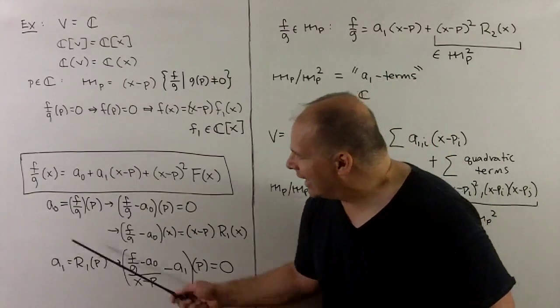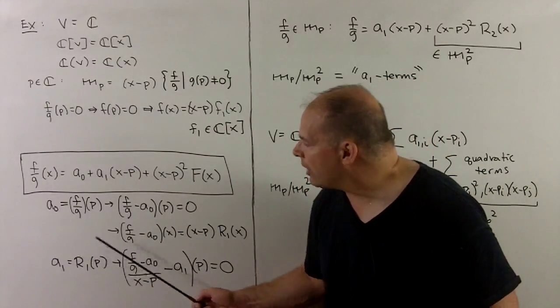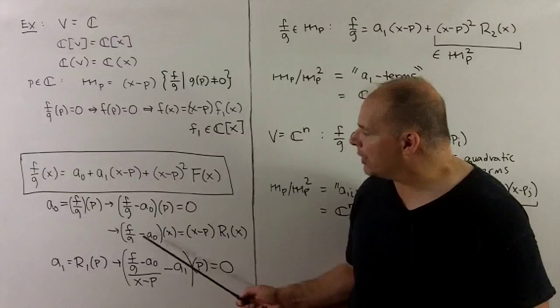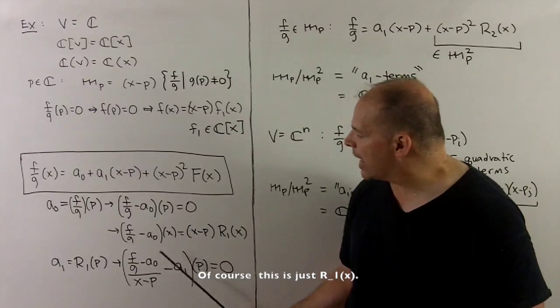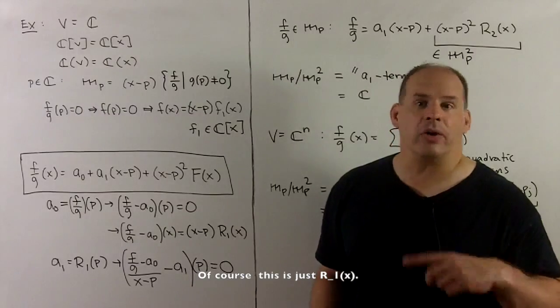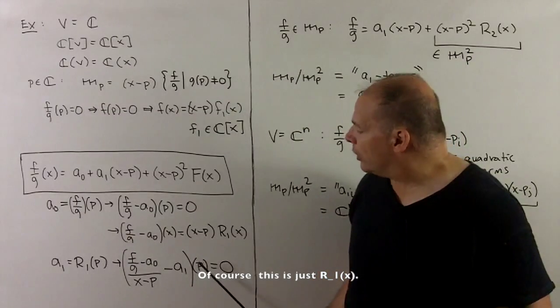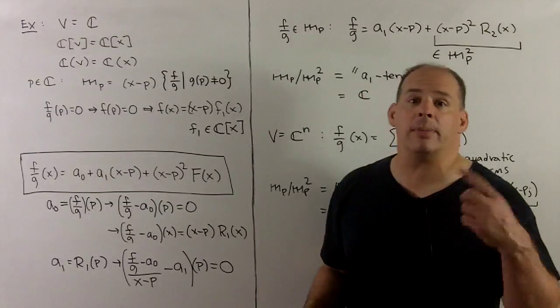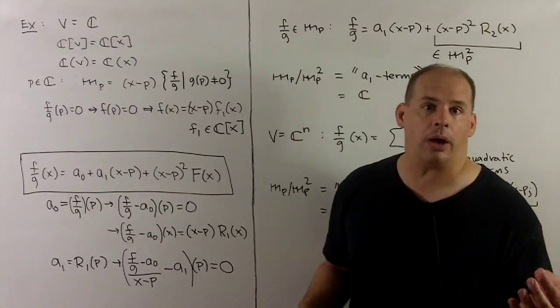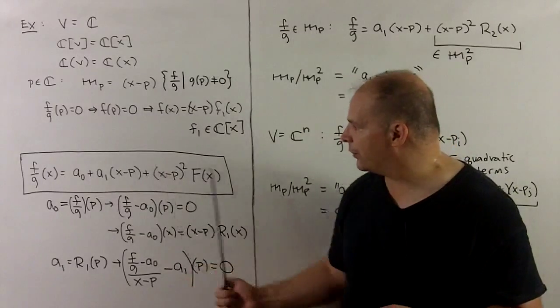We evaluate at P, we get zero. So this has to equal (X - P) times another element of the local ring and so on. But we only want to go out this far.